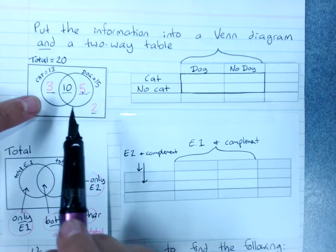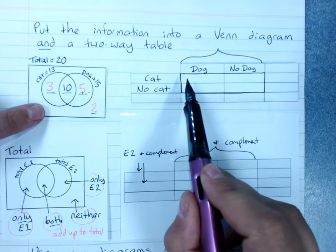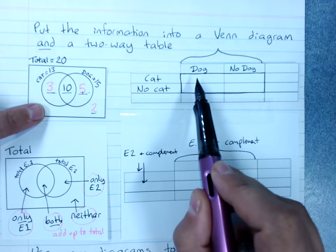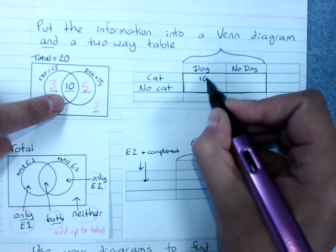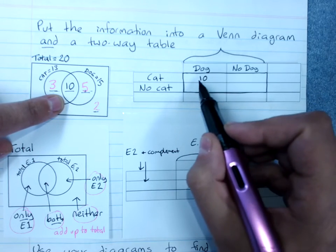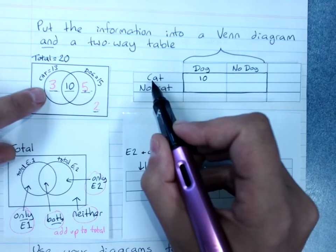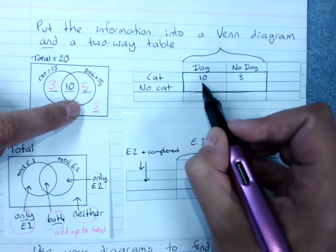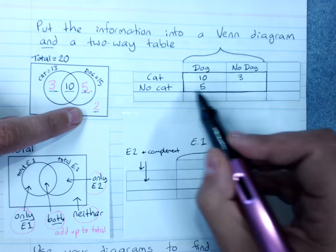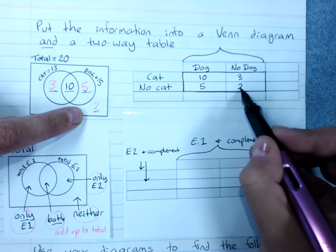Then you can see where the numbers go. Here we've got the people who have a cat and a dog. It comes straight from the Venn diagram. That's ten. Cat but no dog. Three. Dog but no cat. Five. No cat and no dog. Two.